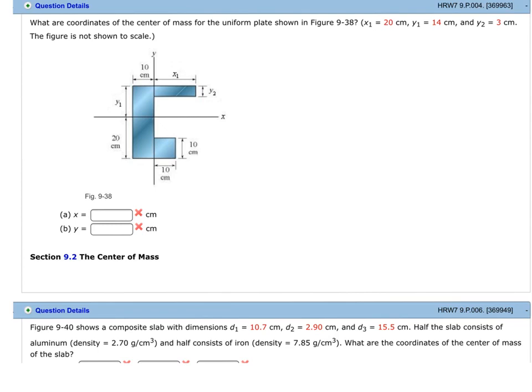We know that since this is a uniform density, the center of mass of each of these sections are basically in the center of each of those plates.